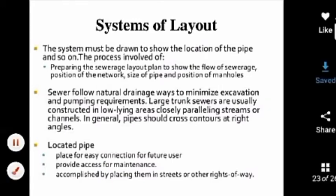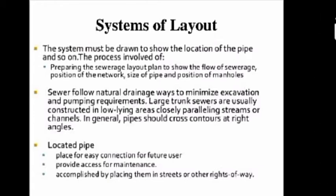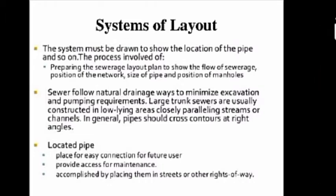Sewers follow natural drainage ways to minimize excavation and pumping requirements. Large trunk sewers are usually constructed in low-lying areas, closely parallel to streams or channels. In general, pipes should cross contours at right angles. Pipes are located for easy access for future users and maintenance, which is accomplished by placing them in streets or other rights of way.